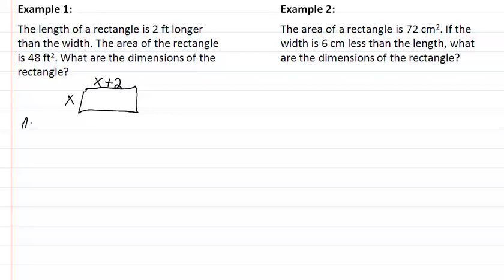They tell us that the area is equal to 48. What we want to do is say 48 is equal to the length times the width. So we are going to take x times x plus 2, and that's our equation.